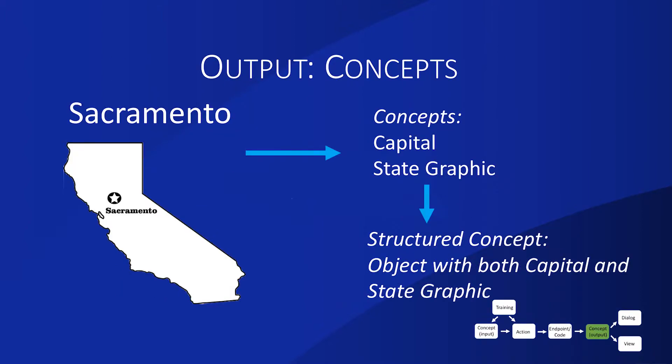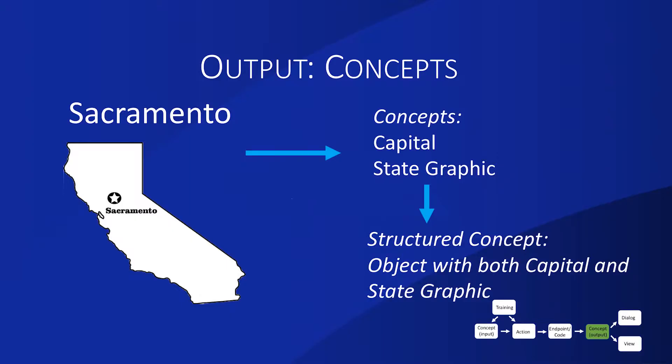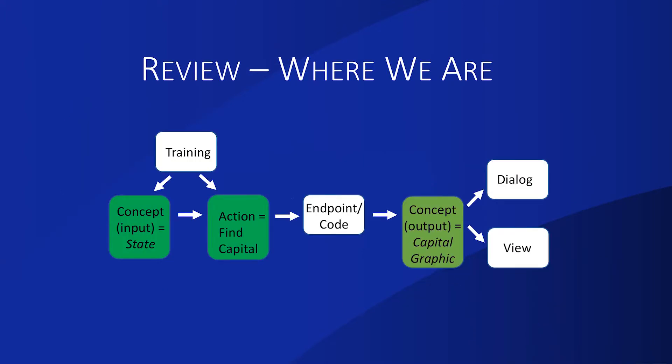On the output side, we're saying 'the capital of California is Sacramento.' So we need that output concept — the capital Sacramento — and a state graphic shown in the UI. Because we have two output concepts, both a capital and a state graphic, we create what's called a structure concept. That's really just an object that holds both the capital and the state graphic. So we've talked about concepts on both the input side — state — and on the output side — capital and state outline graphic — plus the action 'find capital.'